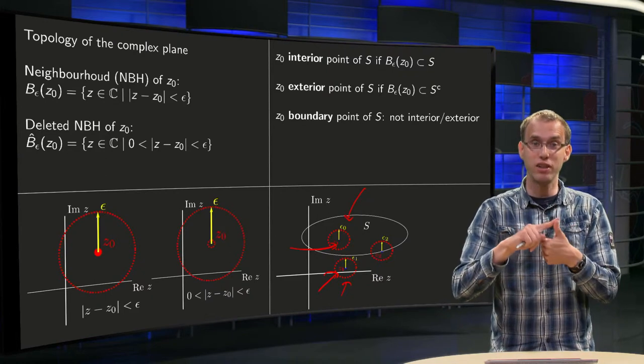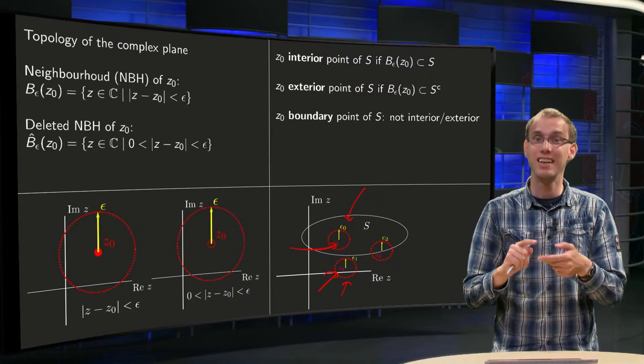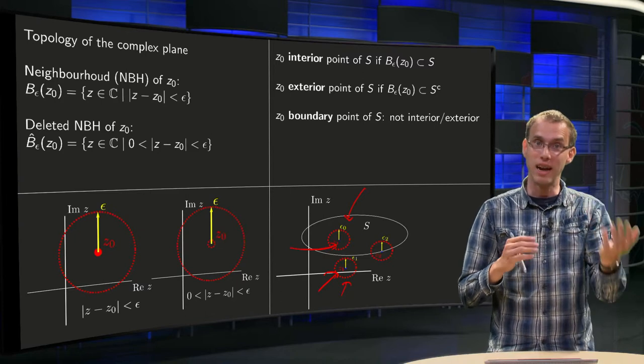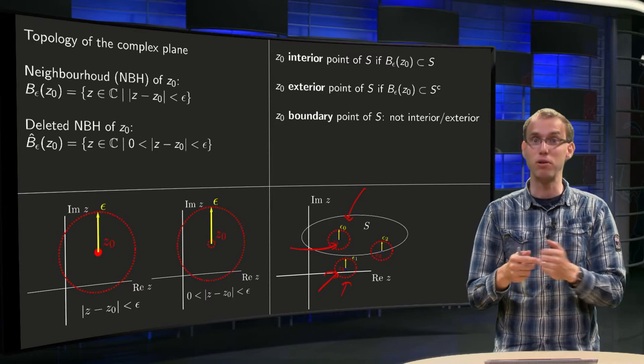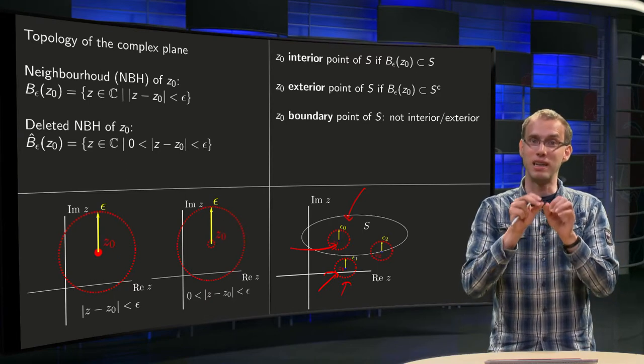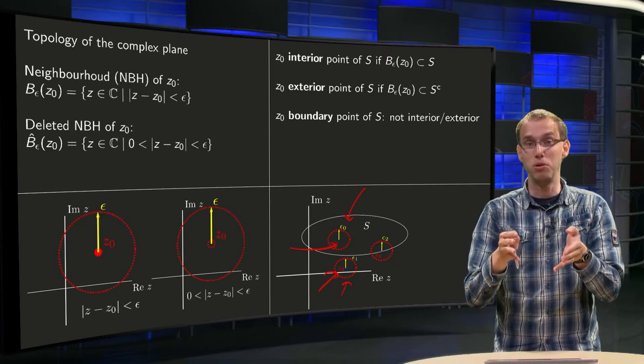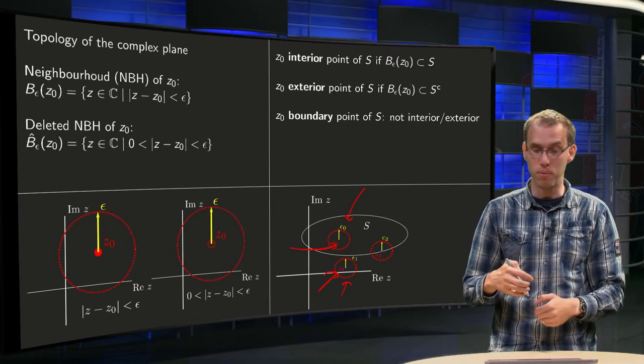So we have interior points of S, exterior points of S, and some points are neither, and those points are called boundary points of S. And what does that mean? Well, you cannot make a neighborhood which is entirely inside S or outside S, so it means any neighborhood you make around it will have points both of S and of the complement of S.